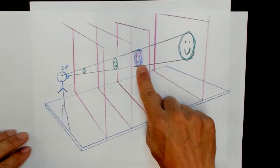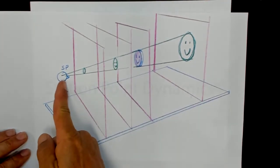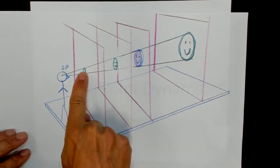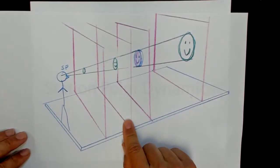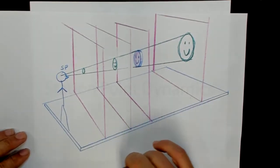If you're drawing this object, the closer the picture plane comes to the viewer, the smaller the image is going to be. If you put the picture plane on the other side of the viewer, then it gets larger.